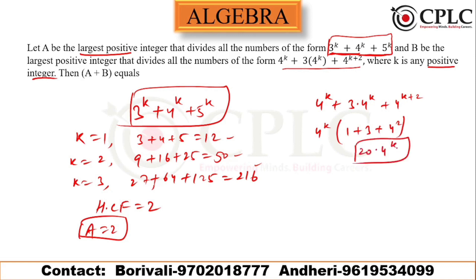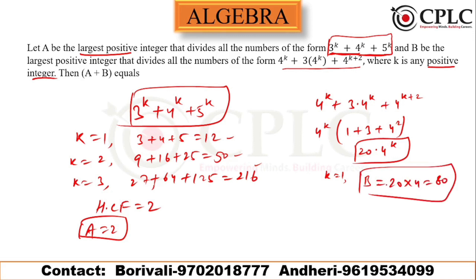The minimum possible value of k is 1. While k=2 and higher are also valid, the common divisor across all values will be determined at k=1, giving 20 × 4^1 = 80. So B is the largest divisor of numbers in this form, and at k=1 we get 80.